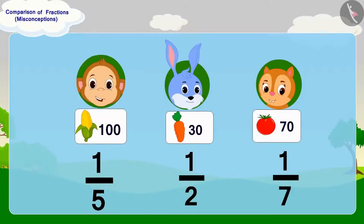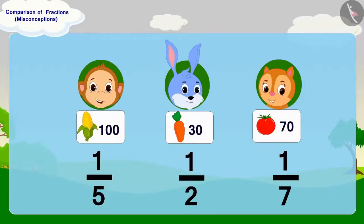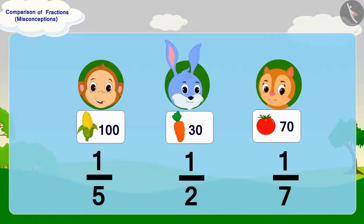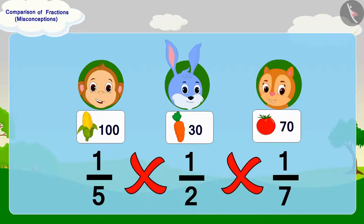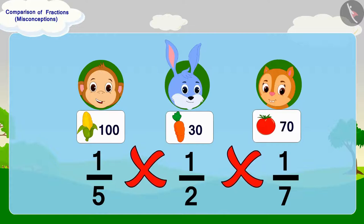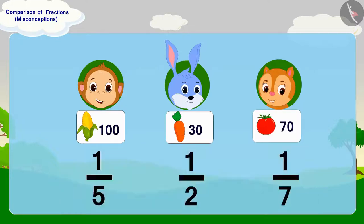The amount of vegetables of Babban, Banni and Chanda are different. Therefore, we cannot tell who has given more vegetables by just comparing the fractions.